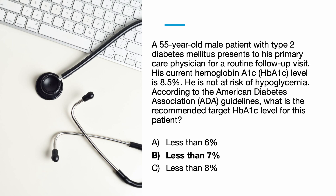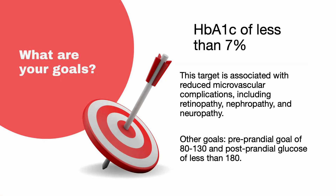The correct answer is B, less than 7%. The ADA recommends a hemoglobin A1c target of less than 7% for most non-pregnant adults with type 2 diabetes. This target is associated with reduced microvascular complications including retinopathy, nephropathy, and neuropathy.